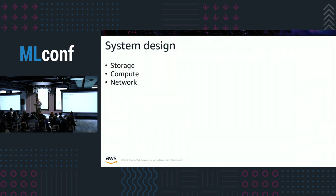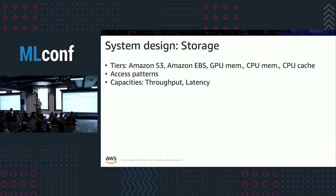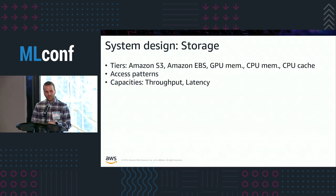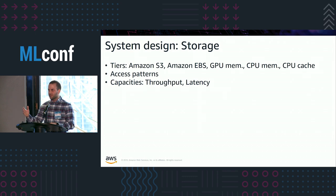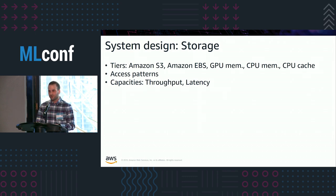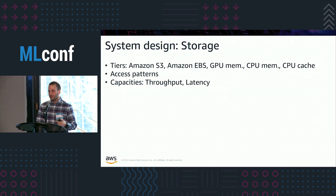Once you've defined the interface, you think about decomposing machine learning workloads into storage, compute, and network operations. You can think of storage as different tiers: Amazon S3, Amazon EBS, GPU memory, CPU memory, and CPU cache, for example — all with their cost-performance trade-offs when you evaluate their throughput and latency.